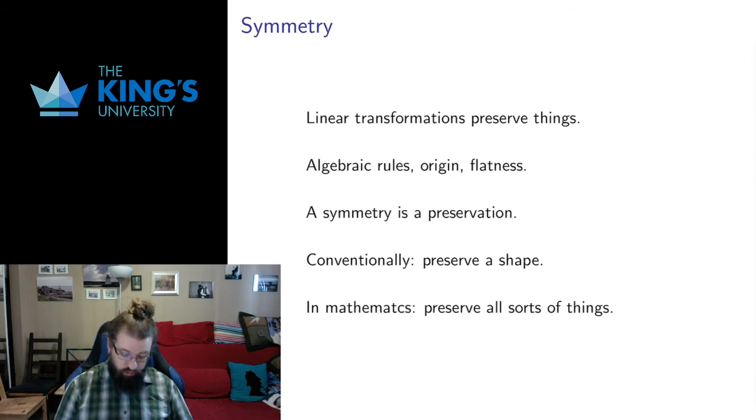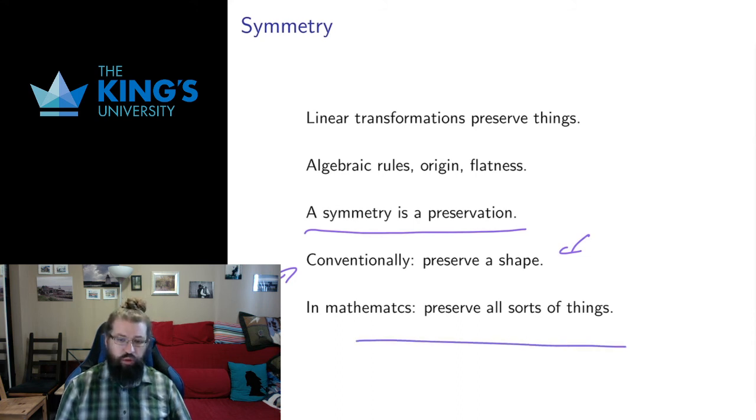The notion of symmetry in mathematics, at least in university and advanced mathematics, is really about what is preserved by an operation or transformation. The conventional notion of symmetry in the general public is that symmetry preserves a shape. We've got symmetries of an octagon or some other kind of shape, and that's certainly a thing that you can do in mathematics. You can have symmetries that preserve a shape. But we're going to use the term in this course and elsewhere in mathematics to preserve all sorts of things.